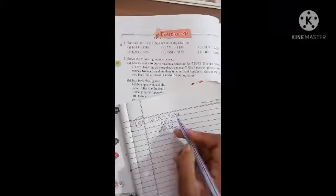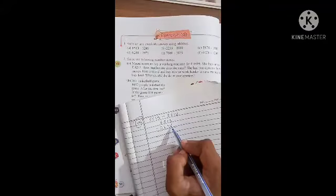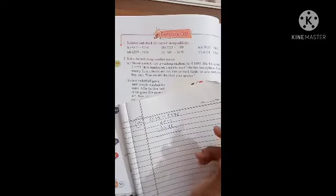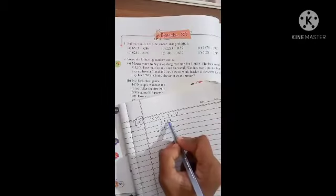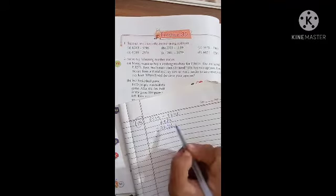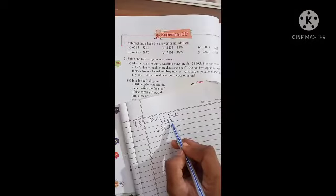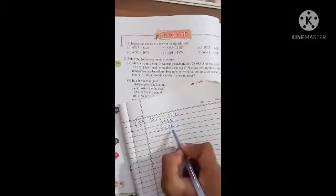Now let's subtract. 3 minus 6, that's not possible, so we have to borrow from the next place. The 1 becomes 0, and this becomes 13. Now 13 minus 6 equals 7.